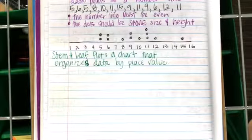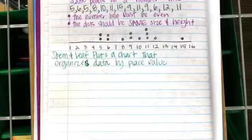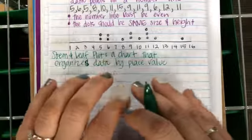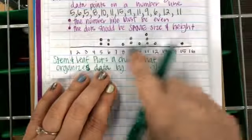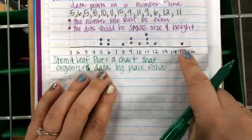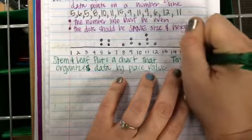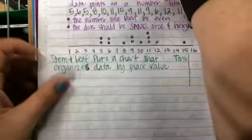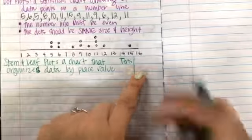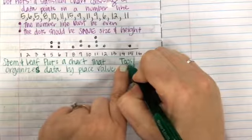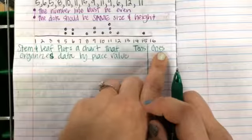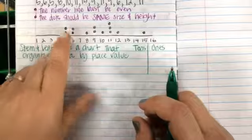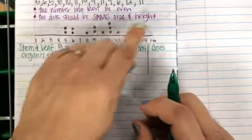Stem and leaf plots are great for showing grade distributions — you can organize by the nineties, eighties, seventies, sixties. The place value part is key. You look for the largest place value in your data, which here is the teens — the tens place. So tens is the largest place value, and what comes after is the ones place. My data sorted is: 5, 5, 6, 6, 8, 9, 9, 10, 11, 11, 11, 12, 15.